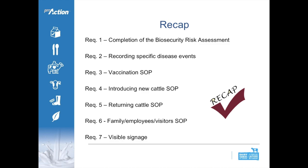To recap, there are seven requirements of the Pro-Action biosecurity module: requirement one requires biennial completion of a biosecurity risk assessment on farm; requirement two necessitates recording specific disease events; requirement three is the vaccination SOP; requirement four outlines guidelines for introducing new cattle and requires an SOP; requirement five requires an SOP for returning cattle; requirement six covers family, employees, and visitors biosecurity SOPs; and requirement seven requires visible signage before entry to the production unit.